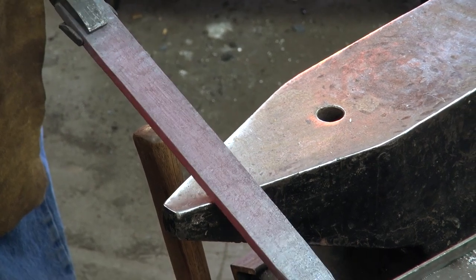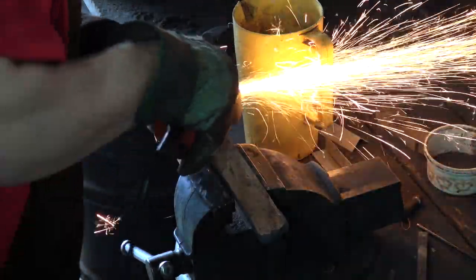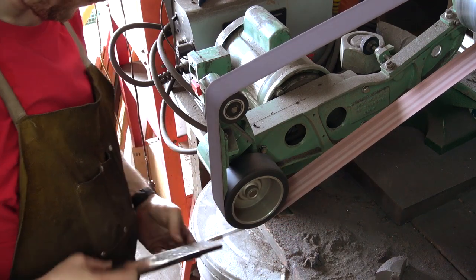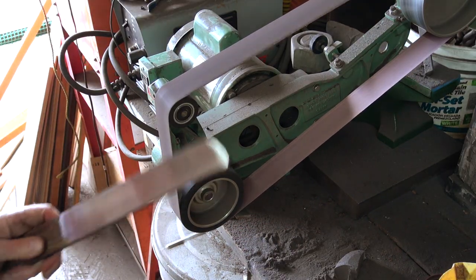After forging the ingot out into a bar, we are eagerly looking forward to how this steel looks. To find out, we need to polish it to a high grit and then lightly etch it before any pattern appears.